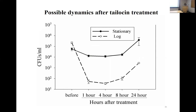Regarding stability of tailocins in field conditions: they are generally good against proteases. Depending on temperature, they are fairly stable within normal temperature ranges expected in the field. Stocks made in the lab have remained stable over several years under refrigeration. Under normal field conditions that's a reasonable question and active area to consider.